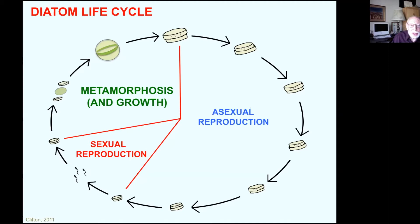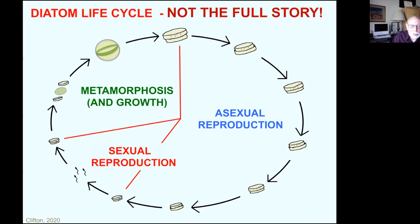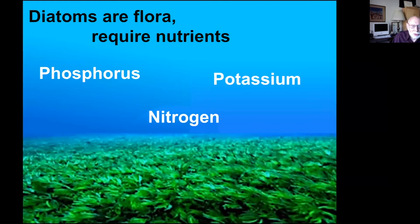And as remarkable as this is, it's not the full story. Diatoms are plants and require nutrients like phosphorus, potassium, and nitrogen — their existence is really tied to the presence of nutrients. When there are lots of nutrients in the water, we have a boom in the diatom population. When there are few nutrients, there aren't many diatoms. So they live this boom-or-bust existence.